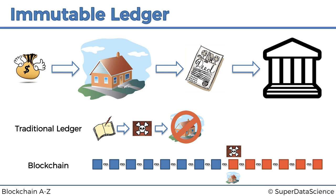And so that's what an immutable ledger is. I also want to point out that this is not just an example pulled out of thin air — this is one of the biggest quoted examples. Property ledgers are one of the biggest quoted examples when people talk about blockchain outside of finance, outside of Bitcoin, outside of other coins, cryptocurrencies, and ICOs.